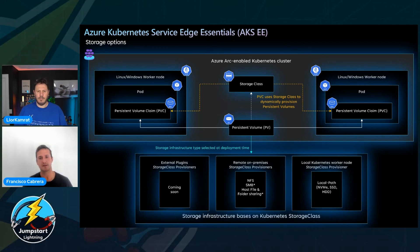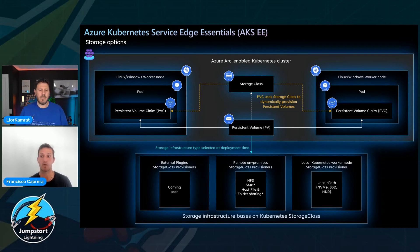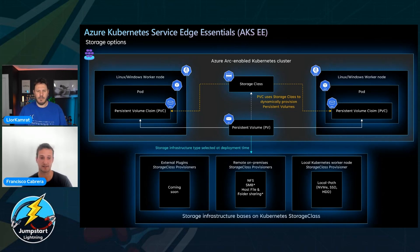Then you have persistent volumes — these are the storage elements in the cluster where you actually store the data. These can be provisioned manually by a Kubernetes administrator or dynamically by a storage class. And finally you have persistent volume claims, the PVCs — when a user or a pod is running, they can claim the storage: I want to use a specific type of storage, a certain amount of storage, and a specific access mode like read-write-many or read-only. Those are the well-known Kubernetes storage concepts.